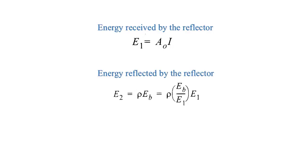The energy absorbed by the collector is given by E3 = αγE2, where α is the absorption factor of the collector, γ is the shape factor, and E2 is the energy reflected by the reflector.